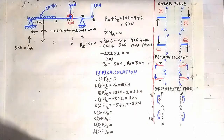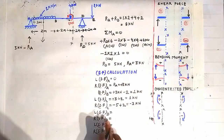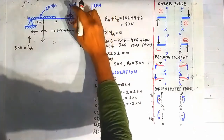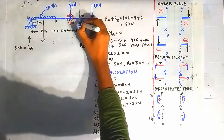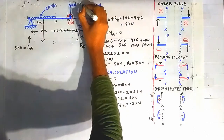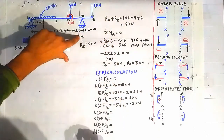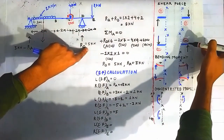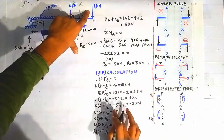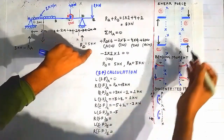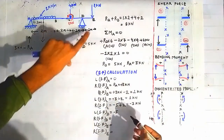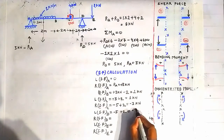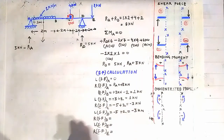For shear force on the left side of point D, we construct a section through the left side of point D and look on the right side. RD = 5 kN causes a shear force of −5 kN and the 2 kN force causes +2 kN using the sign convention. So the shear force on the left side of point D is −5 + 2 = −3 kN.